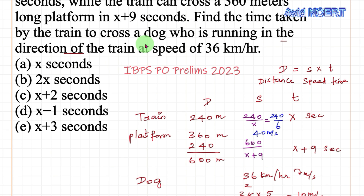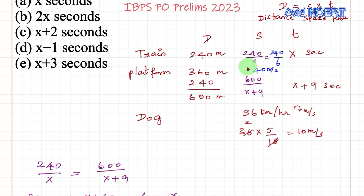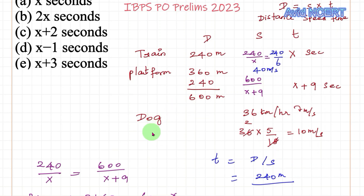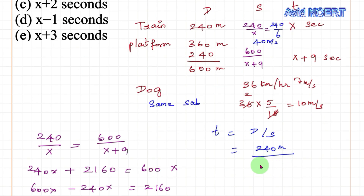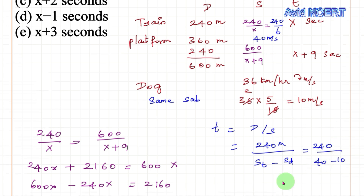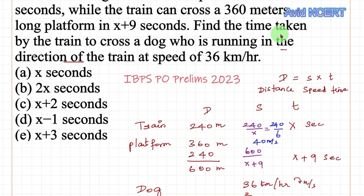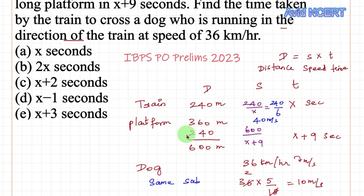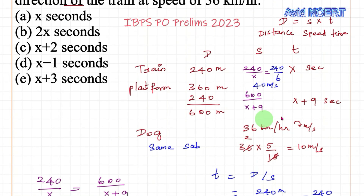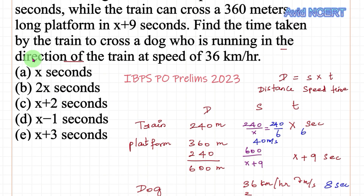To find the time taken by the train to cross the dog, time equals distance divided by speed. The distance is 240 meters. Since the dog is running in the same direction as the train, we subtract the speeds: speed of train minus speed of dog equals 40 minus 10 equals 30 meters per second. So time equals 240 divided by 30, which equals 8 seconds. Since x equals 6, the answer is x plus 2 seconds.